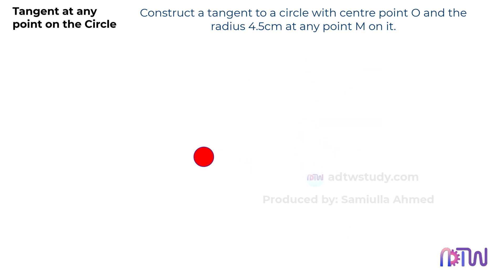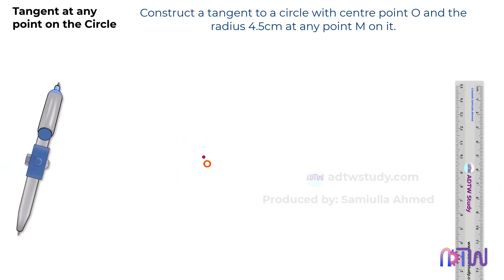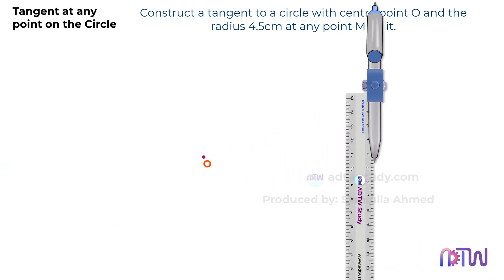First, consider this point as our center point O. Take your compass and set it to 4.5 centimeters wide. Then, draw the circle with this point O as the center.